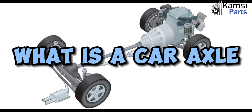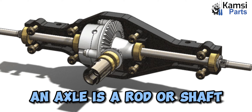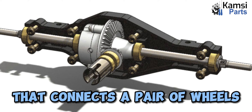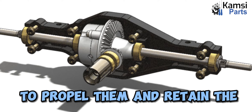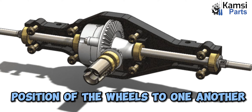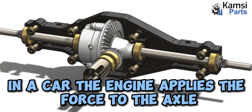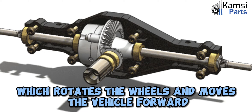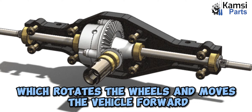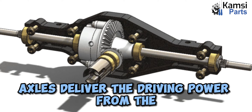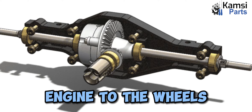What is a car axle? An axle is a rod or shaft that connects a pair of wheels to propel them and retain the position of the wheels relative to one another. In a car, the engine applies force to the axle, which rotates the wheels and moves the vehicle forward. In other words, axles deliver the driving power from the engine to the wheels.